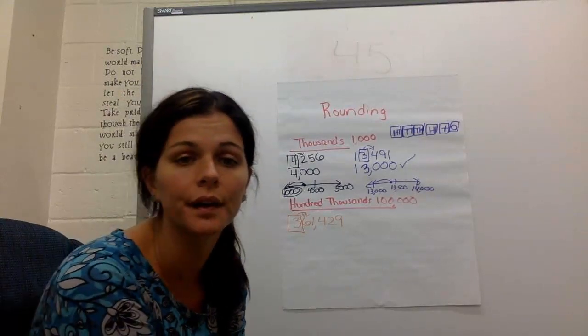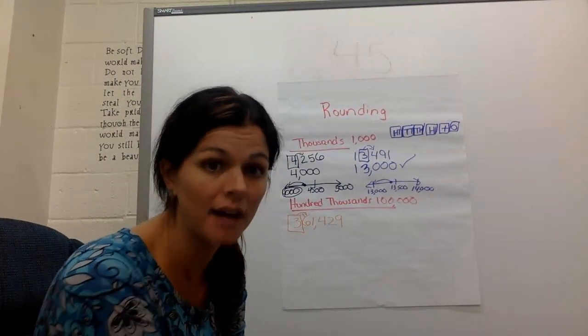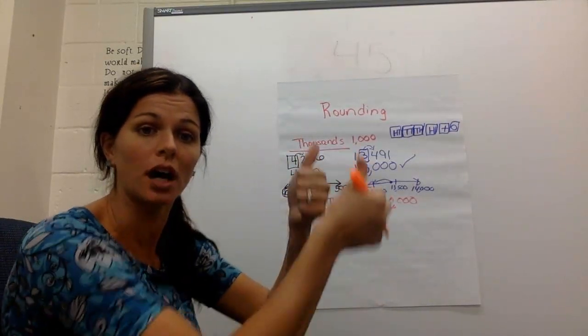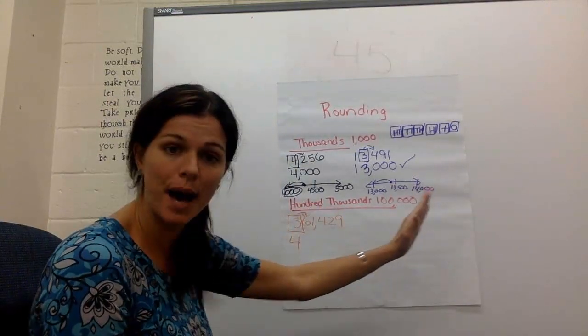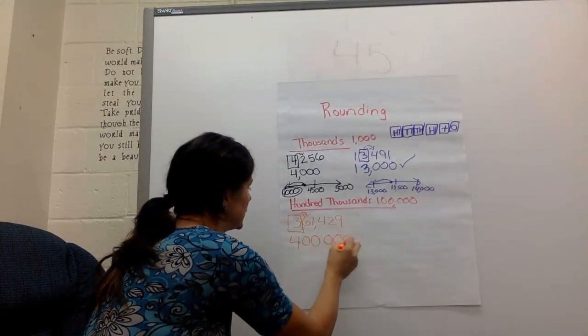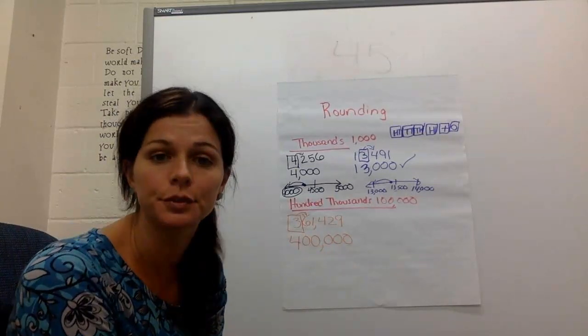That 6 is going to do all the work. 6 says, well, 5 and above gives it a shove, and 6 is above 5. So I'm going to give this 3 a shove up into 4. Everything after the box turns into zeros. And then you put your comma. My answer is 400,000.